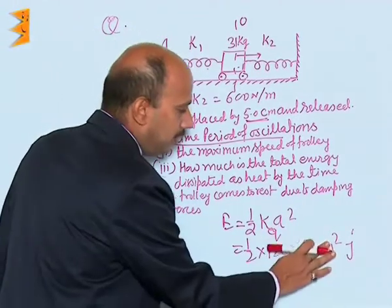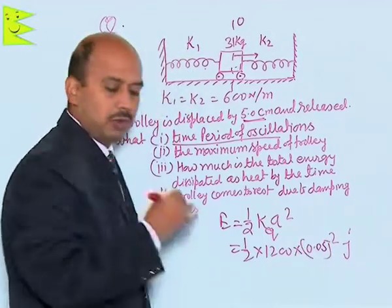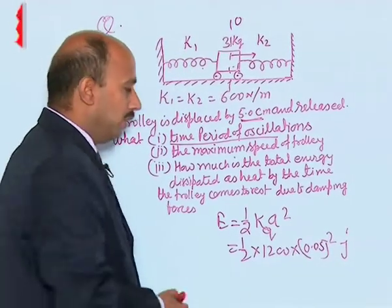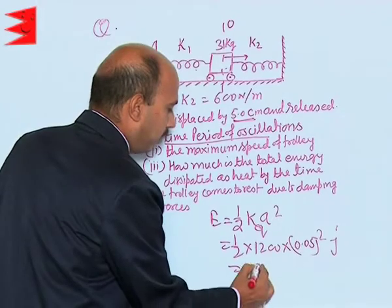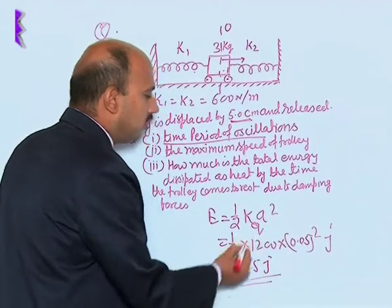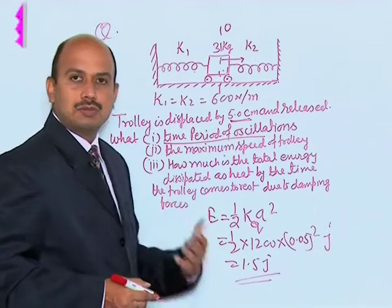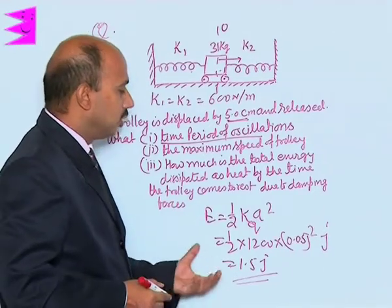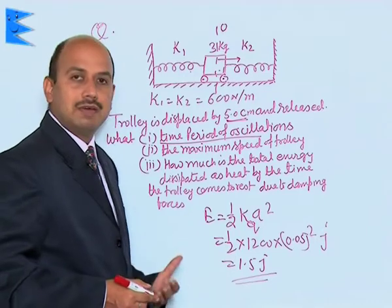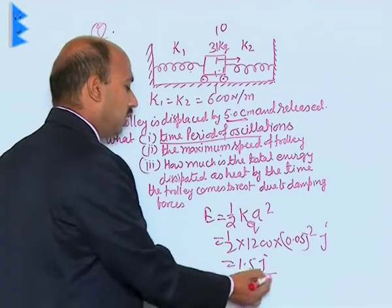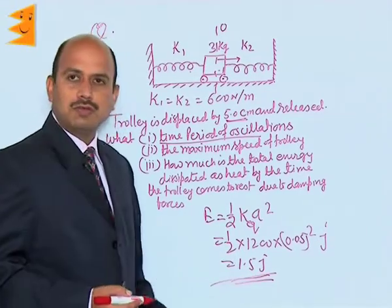Here we can get 0.05, when we solve it, we can get 1.5 joule. This is the total energy, and when the trolley comes to rest, all the energy of this oscillating body gets dissipated in the form of heat. This is the total energy dissipated in the form of heat.